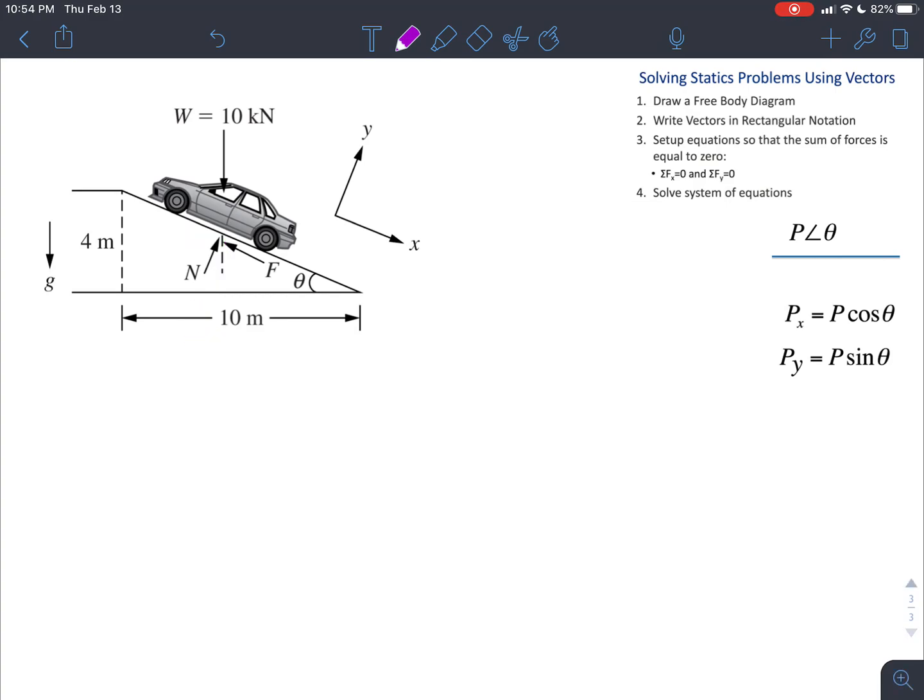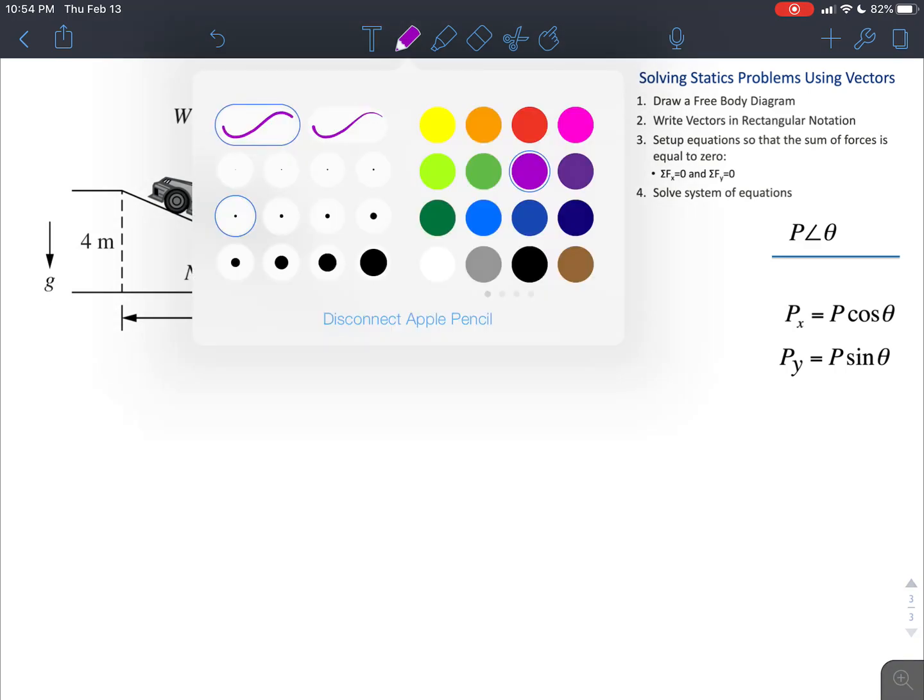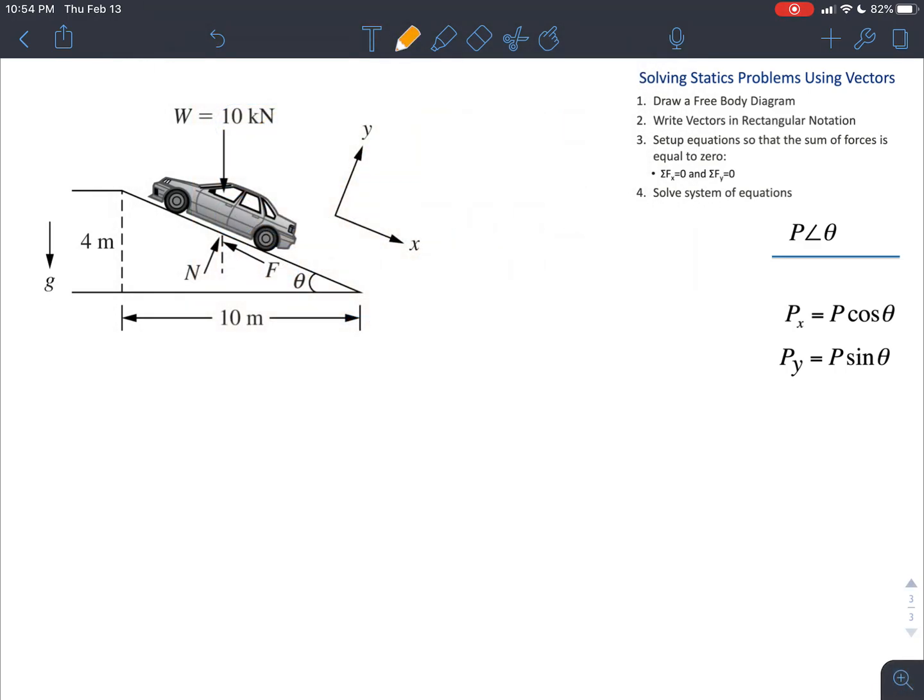Because the car is sitting on a slanted surface, there's kind of a sneaky thing that we can do here with our axes that really helps make this problem a little bit easier. You can see they've already laid out here that we actually define the x-axis as being parallel to the surface of the ramp, and we define the y-axis as being perpendicular to or normal to, as we would say in physics-speak, the surface of the ramp.